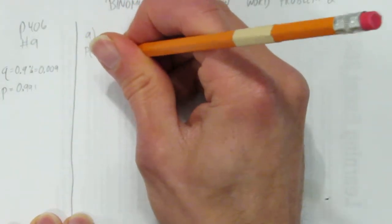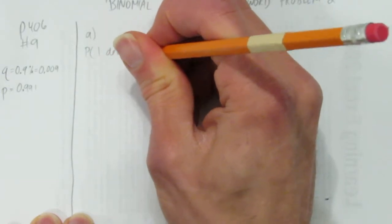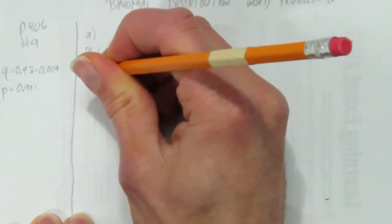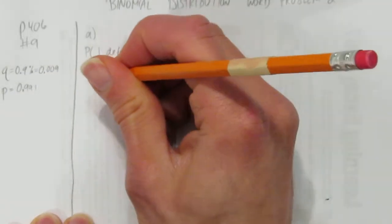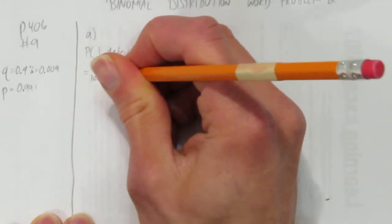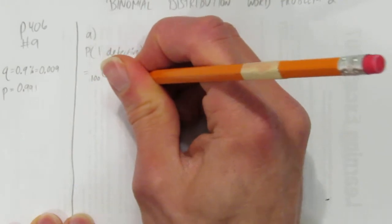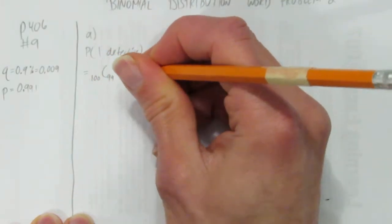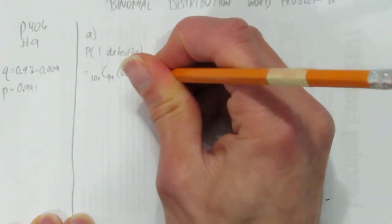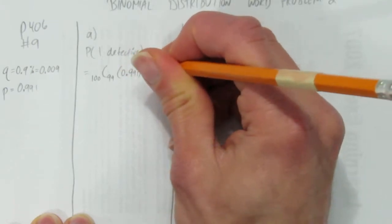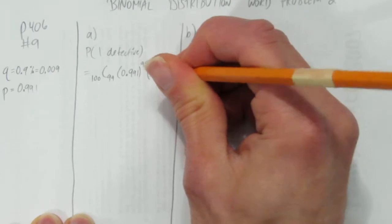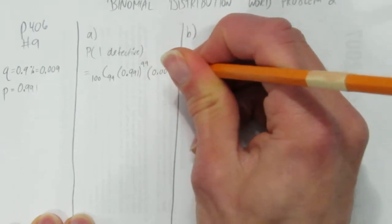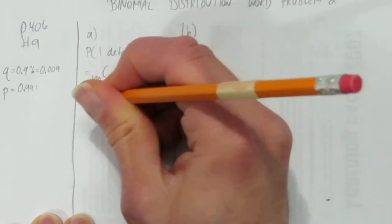This is a binomial distribution. We're looking for the probability of 1 being defective. If you know your binomial distribution formula, that's going to be of the 100 computer chips, choose 99 to be successful. Your successful probability is 0.991, so you raise that to the power of 99. And your failure probability is 0.009, and you have exactly one of those.